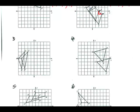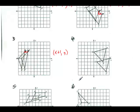Number three: here we have U as the original and U prime as the new image. I'm going from the original to the new one. For X, I'm going to the right, so that's plus one space. I'm not going up or down at all, so the Y just stays the same.